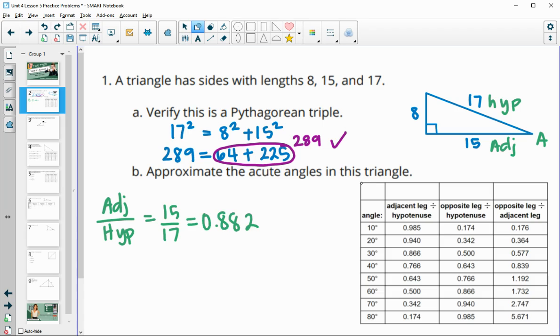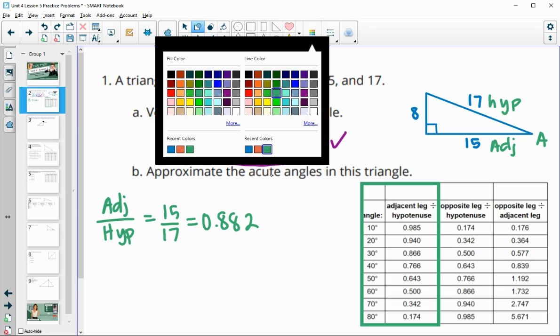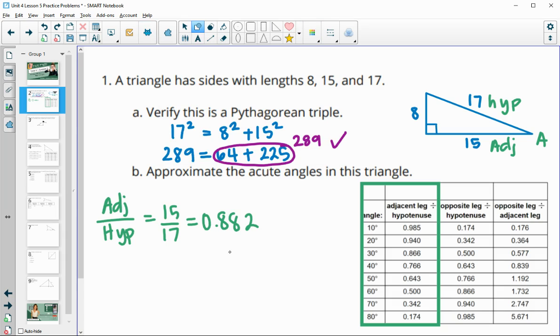So if we take a look here in this first column, we can look for a number that is close to 0.882. We see that 0.882 will be between these two numbers here, 0.886 and 0.766. So we know that angle A is going to be somewhere between 30 and 40. 0.882 is closer to 0.886, so I'll maybe guess that it's about 32 degrees.